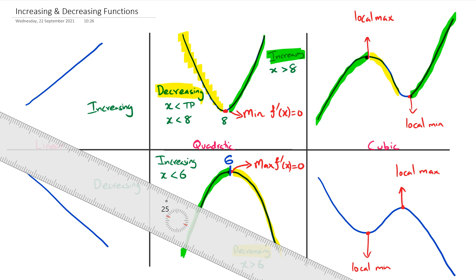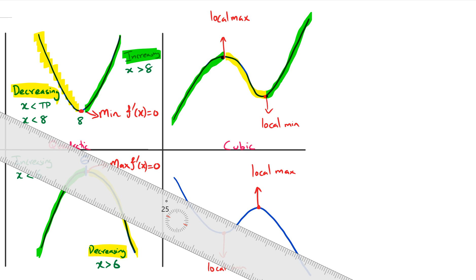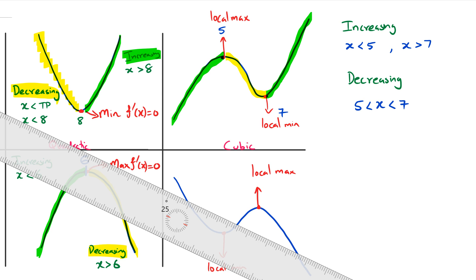The function is decreasing from the local max to the local minimum. To write this up, let's choose 5 for the local max and 7 for the local min. The function is increasing when x is less than 5 and also when x is greater than 7. It is decreasing when x is between 5 and 7.